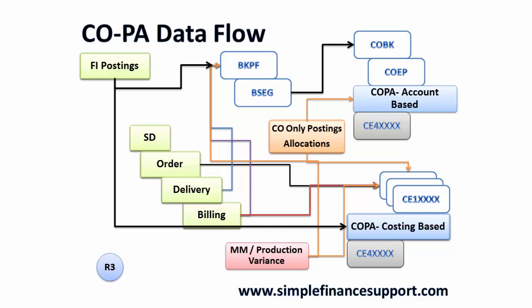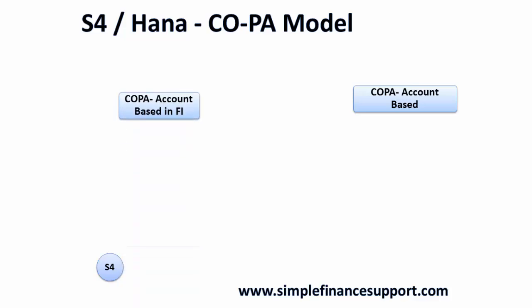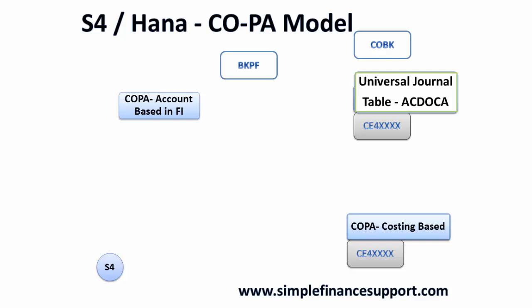Now let's look at what is happening in S/4 HANA COPA. In S/4 HANA, COPA account-based is in FI only — the CO layer is eliminated. COPA costing-based remains. The segment table is the same, as its purpose is derivation of profitability segments, which are combinations of COPA characteristic values. From the database tables perspective, you still have the BKPF table.